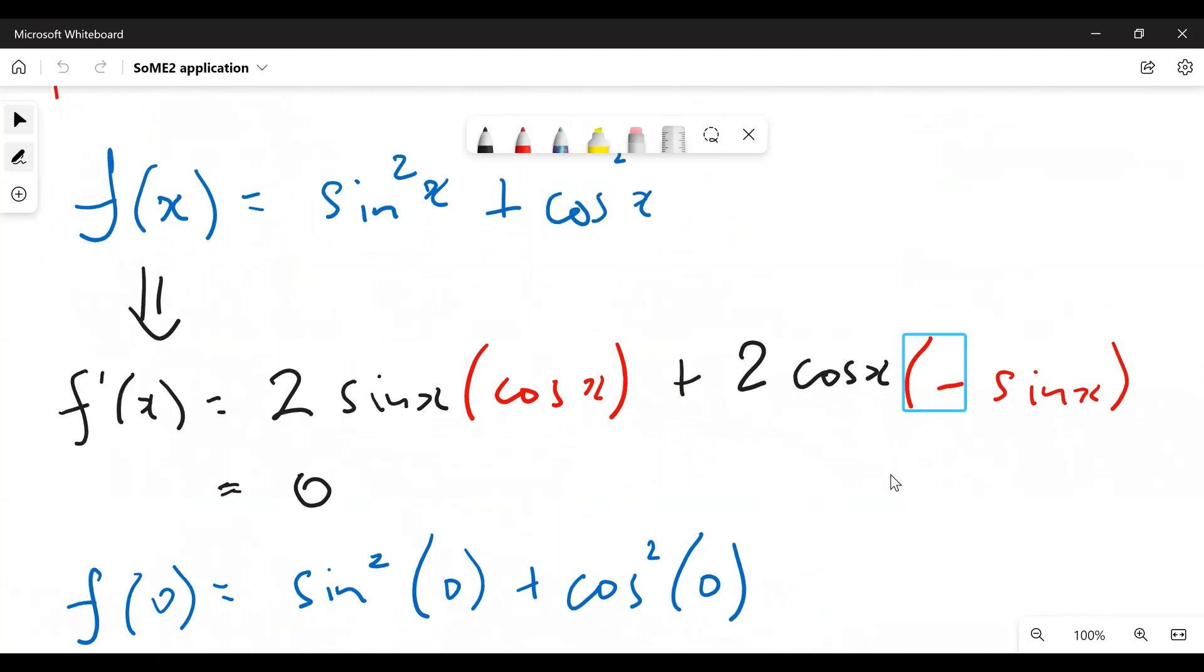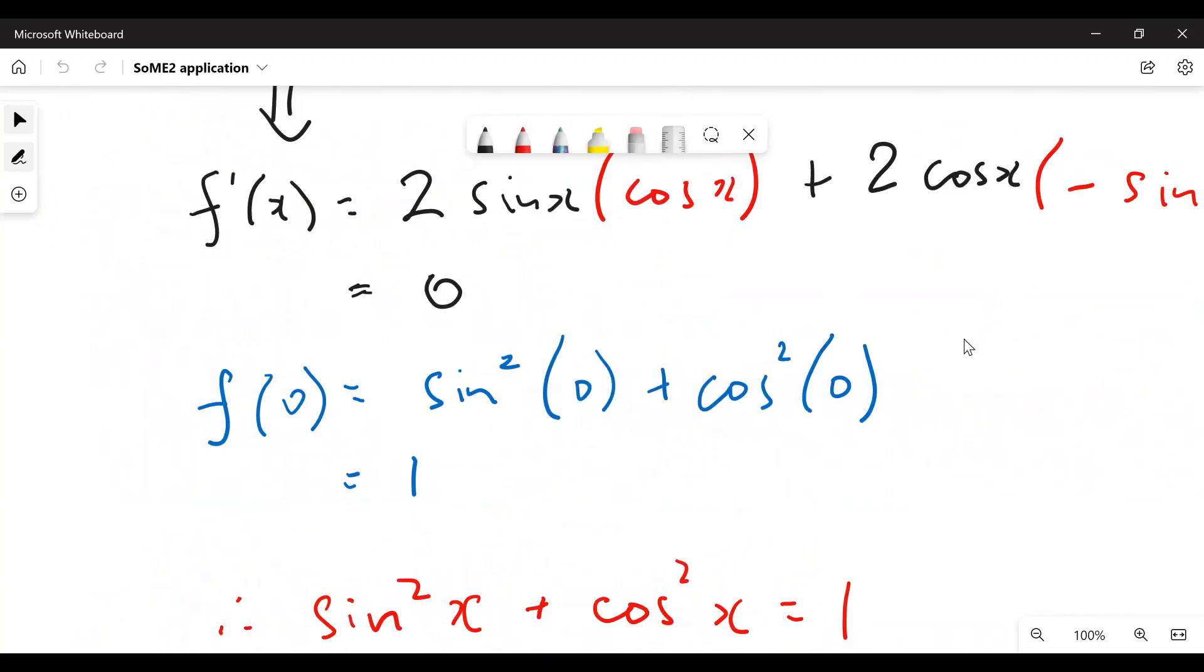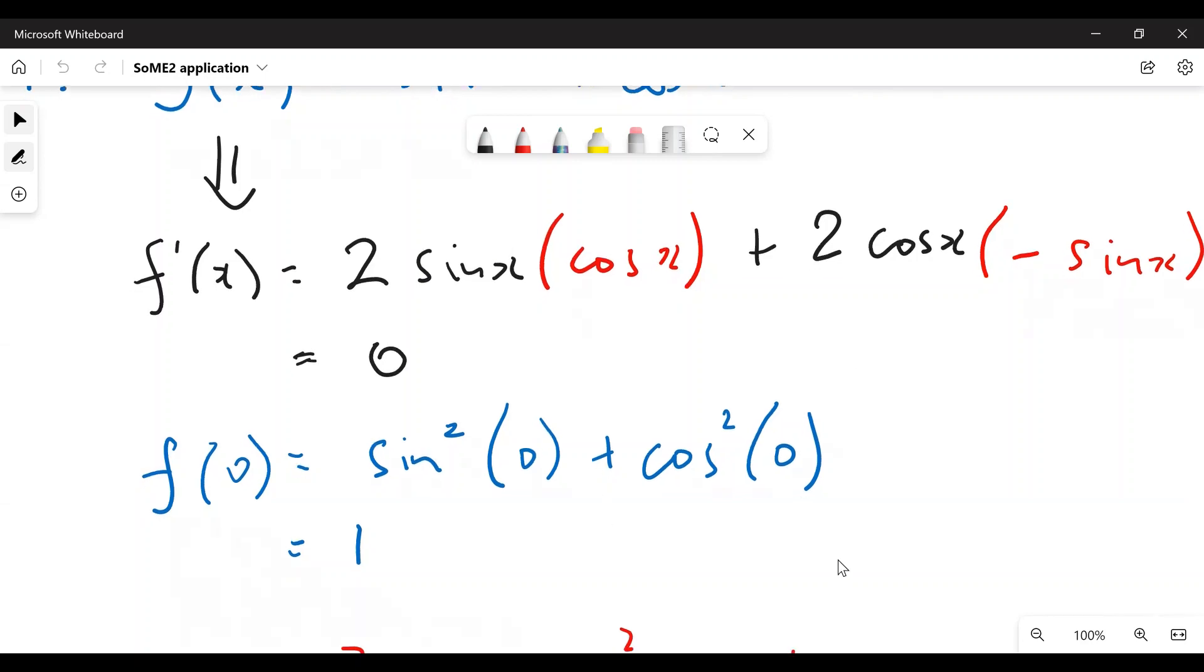Yes, very easy. Just chain rule. It's zero and then sub in the function where x equals zero, sine zero is zero, cosine zero is one, and then the sum is one. Okay, that's all. And you've proven it.